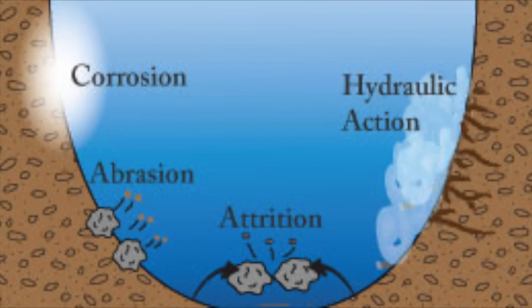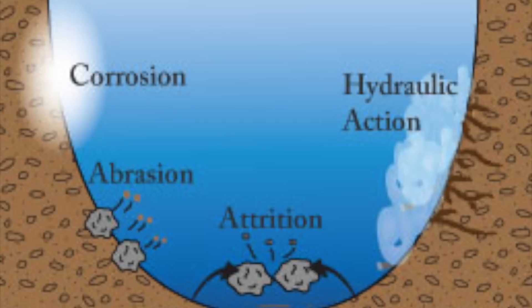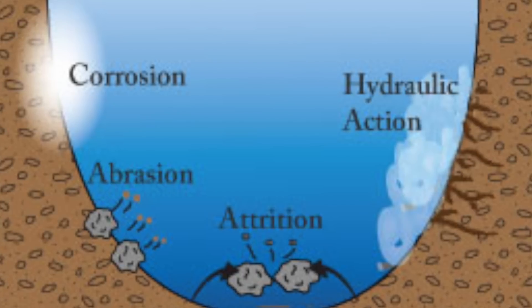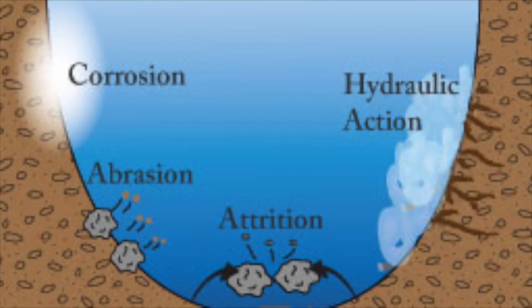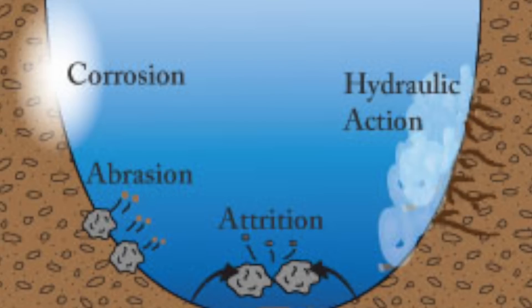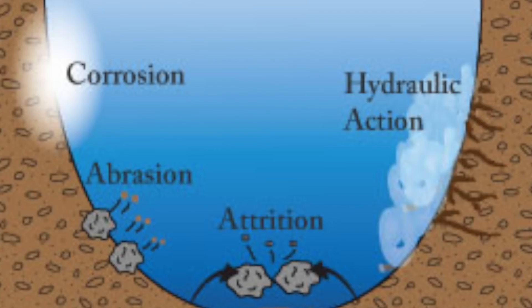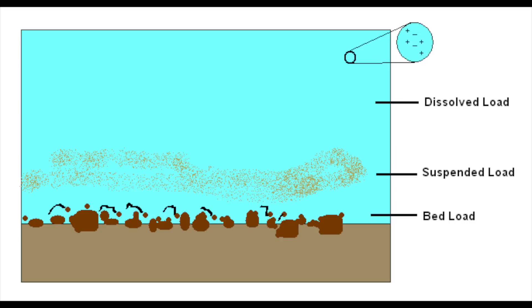Finally, corrosion or solution is where a chemical reaction occurs with slightly acidic water, dissolving calcium and breaking down rocks such as limestone. So those are four different ways that erosion can happen. Now after erosion happens, material has to be transported or deposited.